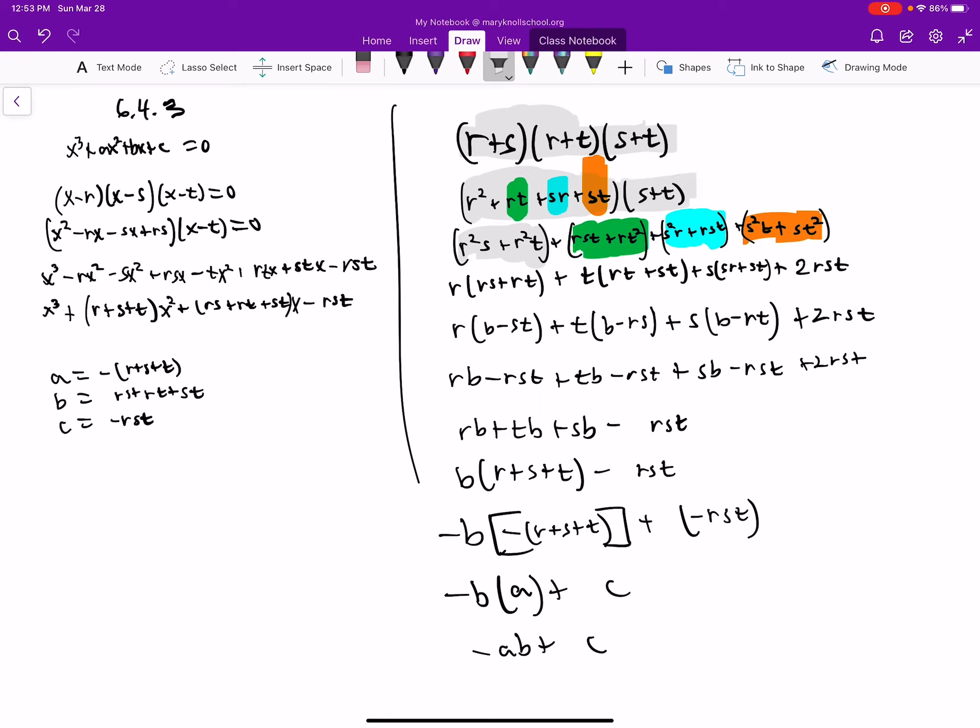Now we have this full expansion. I noticed we have an r-squared term in two of them, a t-squared term in two of them, and an s-squared term in two of them as well.